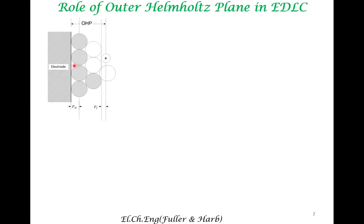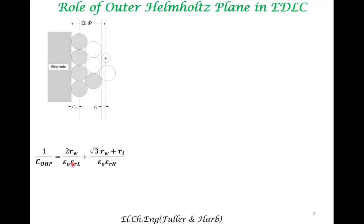We have already discussed the meaning of the inner Helmholtz plane and the outer Helmholtz plane. We have mentioned the formula for the capacitance from the outer Helmholtz plane. It involves two permittivities — low and high — where the low permittivity refers to the permittivity of the solvent-ion system in that region, and the high permittivity refers to the permittivity in the bulk of the solution.